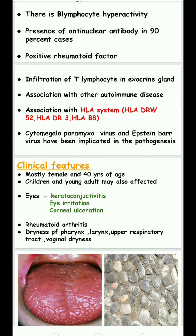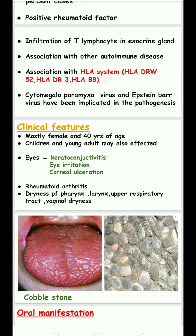In clinical features, females above 40 years of age are mostly affected, though children and young adults can also be affected. The eye becomes dry, a condition called keratoconjunctivitis sicca, causing eye irritation, ulceration, rheumatoid arthritis along with Sjögren's syndrome, and dryness of the pharynx, larynx, and upper respiratory tract.